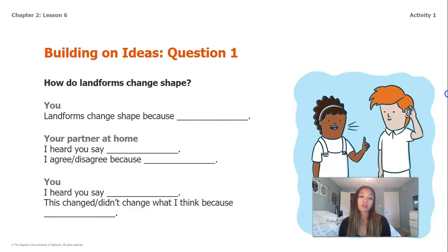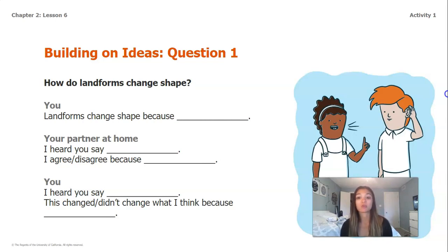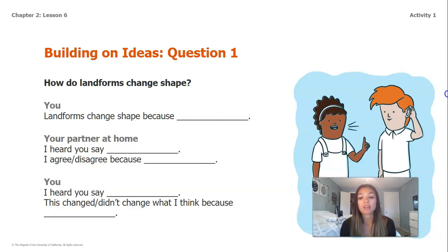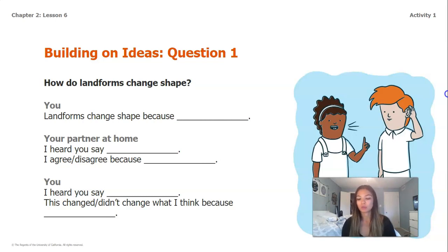You're going to start off by saying: landforms change shape because blank. Your partner will say: I heard you say — and they'll repeat what you said — then add: I agree or disagree because blank. And the very last part, step three, you are going to say: I heard you say blank, and fill in what your partner said, then: this changed or didn't change what I think because blank. Go ahead and pause this video to answer our question: how do landforms change shape?